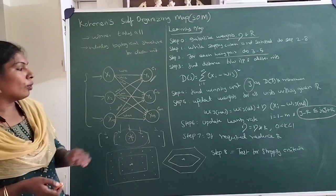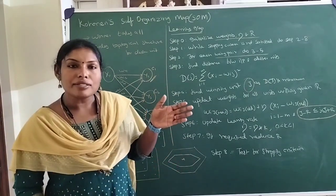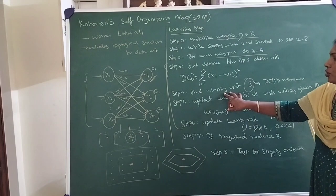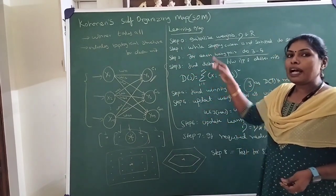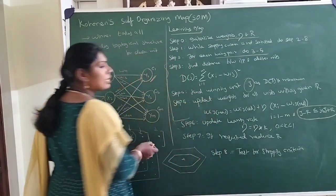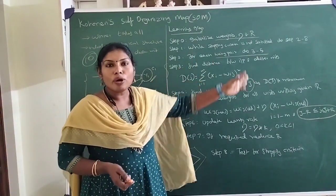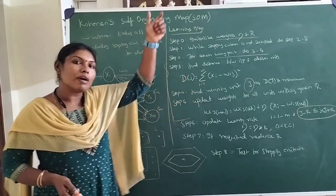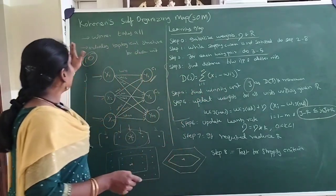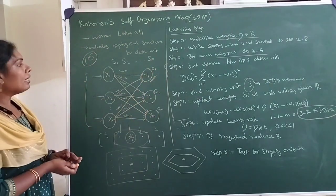That is a very important principle to know. Once this is done for one pattern, we repeat it for all n number of patterns. My dataset might consist of 10 or 20 input training pairs. For all input training pairs, I repeat the steps: calculate the distance, choose one winning unit, update weight, go back, take the next pair and do it. From step 3 to 5, I do this for all — this constitutes one single iteration. For S1 through S10, I take S1, apply it, calculate cluster weights, select the winning unit, update weight, go back, choose S2, and so on for all 10.